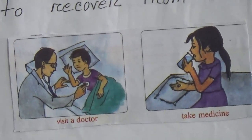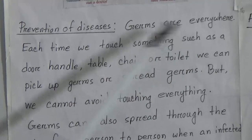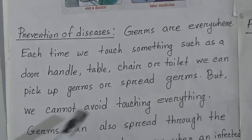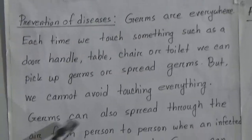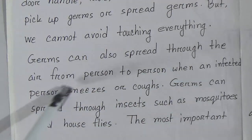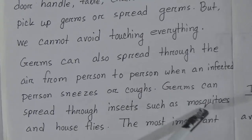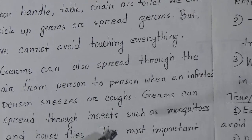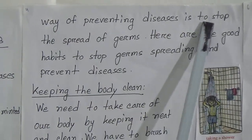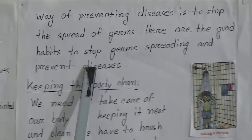The next point is prevention of diseases. Germs are everywhere. Each time we touch something such as a door handle, table, chair, or toilet, we can pick up or spread germs. Germs can also spread from person to person when an infected person sneezes or coughs. Germs can also spread through insects such as mosquitoes and houseflies. The most important way to prevent diseases is to stop the spread of germs.